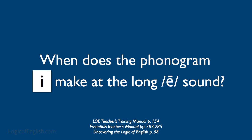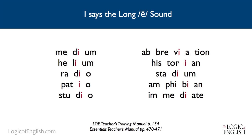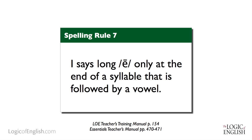Now, when does the phonogram I make the long E sound? Let's once again have you discover this principle. You can look at the words on the screen, also found on page 154 of the teacher's training manual. Words like medium, helium, radio, patio, studio — I is saying the long E sound at the end of the syllable. However, that syllable is also preceding a vowel. So the rule is I says long E only at the end of a syllable that is followed by a vowel.